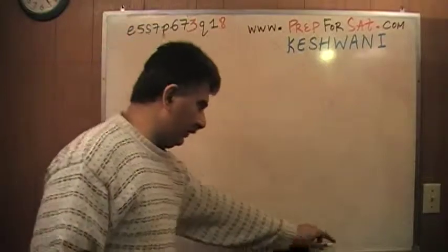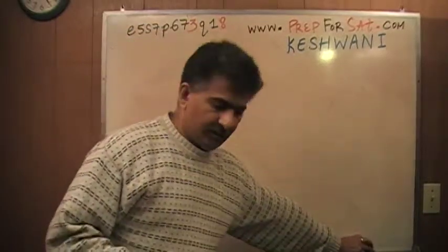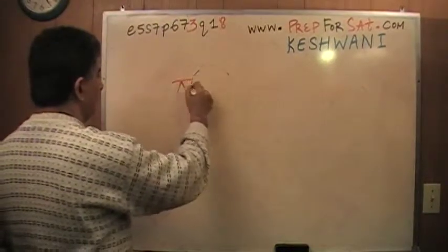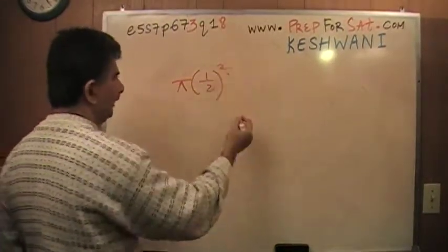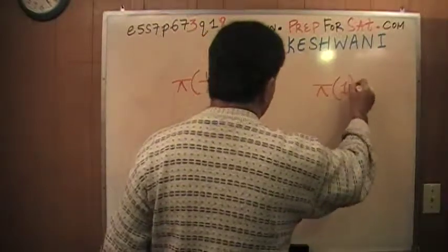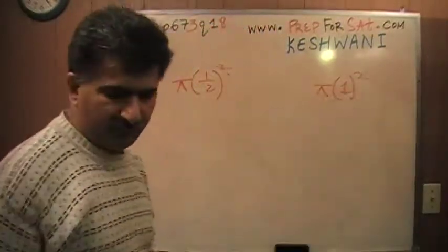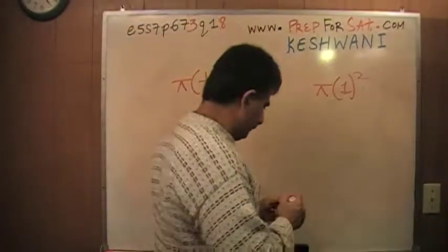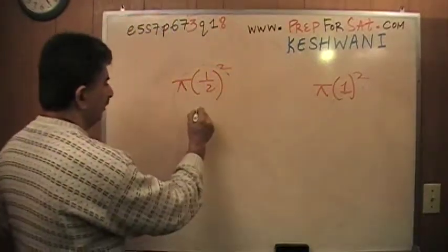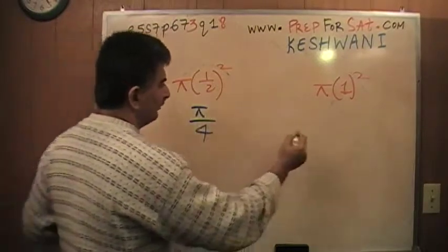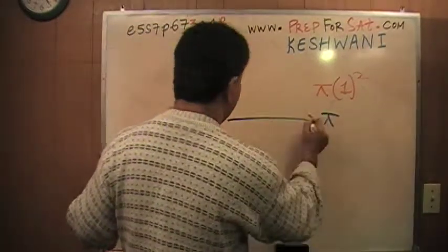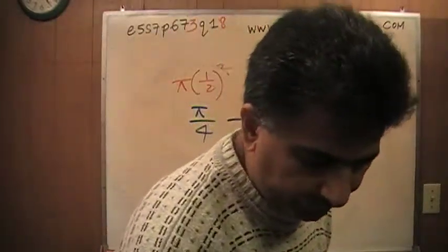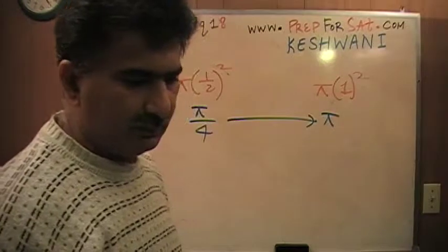If you want to do it out properly, academically, it's very simple. The first circle has area pi r squared with radius one, giving just pi. The other has radius one-half, giving pi times one-half squared, which is pi over four. As you can see, pi is four times pi over four, so the ratio is four to one. The answer is D.